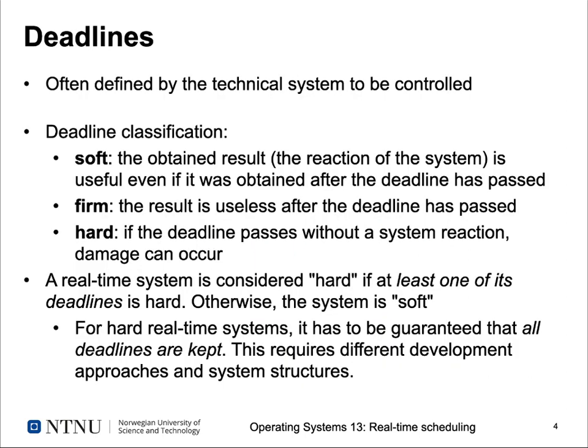In order to figure out when a response to some stimulus is on time, we define deadlines. These deadlines are in most cases defined by the technical system to be controlled — for example, by the speed at which a system can move or brake. And we can classify deadlines as follows.